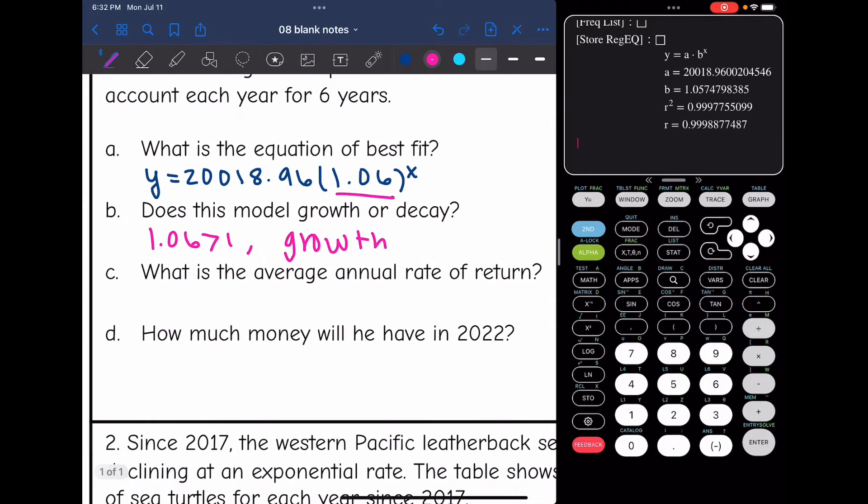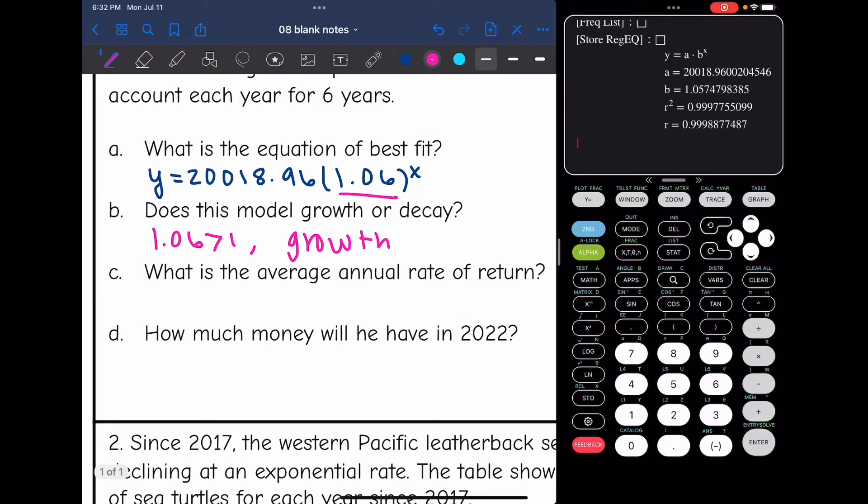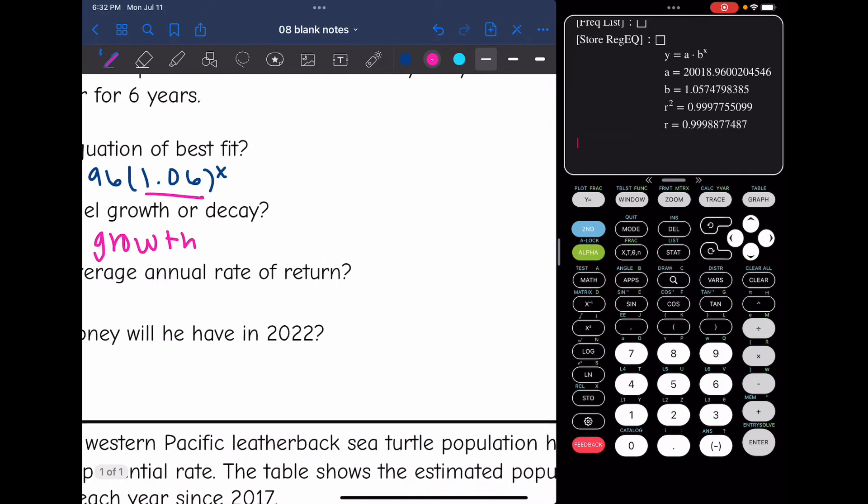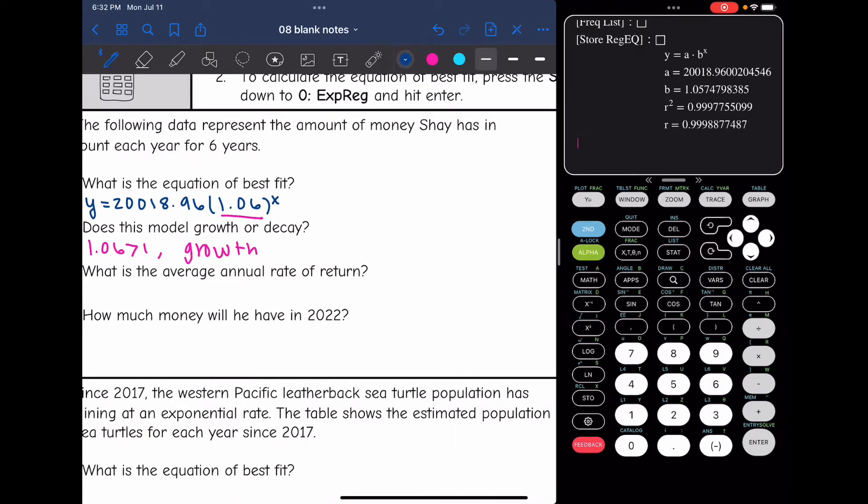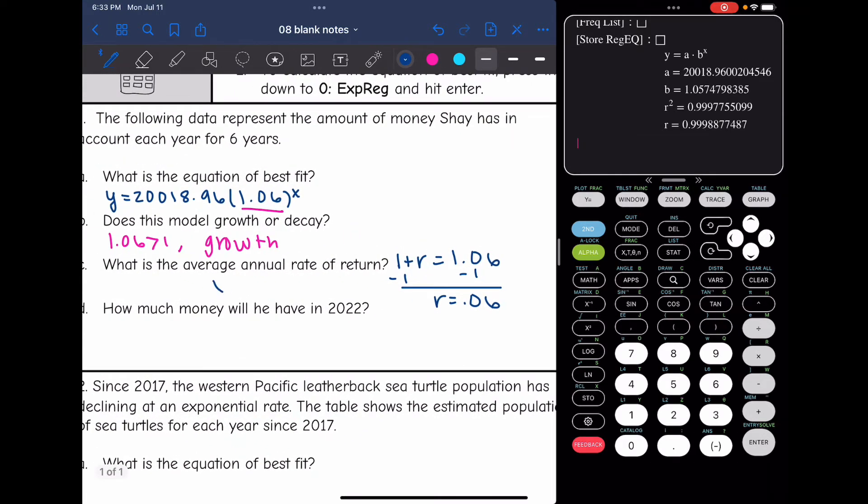Then it says, what is the average annual rate of return? So since this is a growth function, that means that they used 1 plus R to get the 1.06 B value. So if I subtract 1, that will tell me what R is, and R is 0.06. So that means that they had a 6% average annual rate of return.